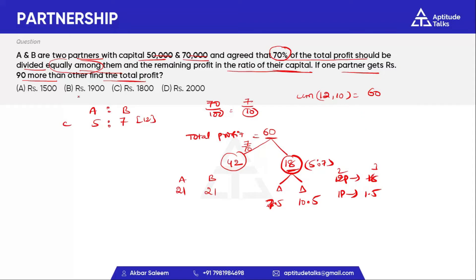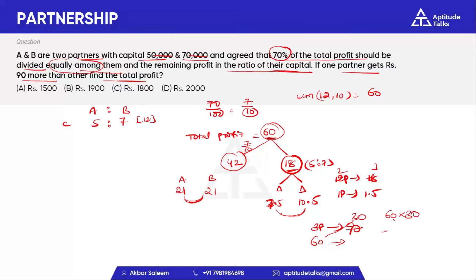One partner gets 90 rupees more than another. This is the difference in their shares. Looking at the parts of the problem for A and B — the total is 60 parts. 60 into 30 means 6 times 3 is 18, and 18 equals 100. So option C is correct.